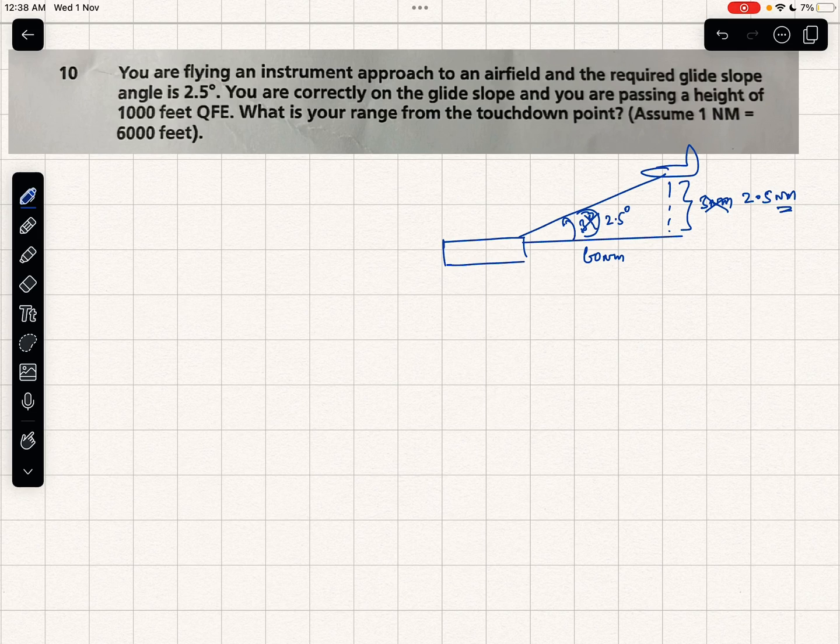You are flying an instrument approach to an airfield and the required glide slope angle is 2.5 degrees. Let's say this is your instrument approach to the airfield.